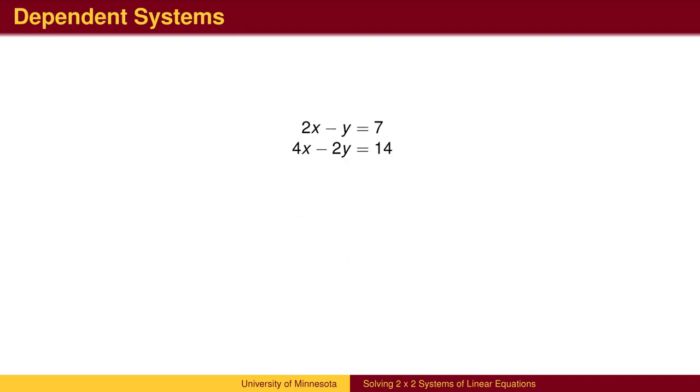In this example, when we multiply the top line by negative 2, and add the equations together, we get the true statement 0 equals 0. The reason this happened is that the two equations represented the same line, so that every point on the line is a solution. There are an infinite number of points that solve this equation. We call this system of equations dependent.